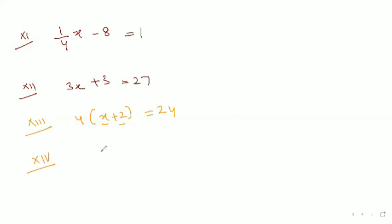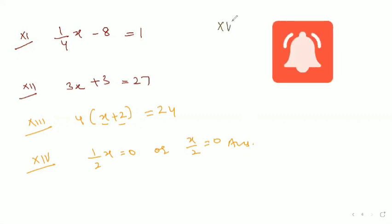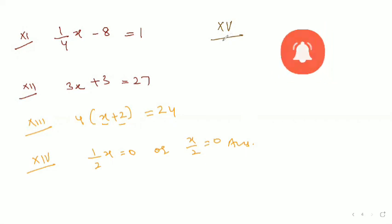Now the fourteenth part: one half of a number is 0. Suppose the number be x. So one half of x equals 0, or we can write it as x/2 = 0. This is our answer.